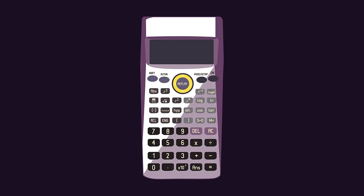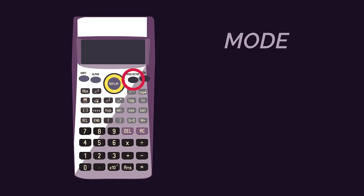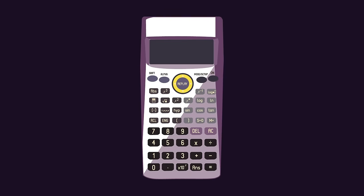When you're done with your table of values, to get your calculator back to normal, click mode and then 1comp. So that's how you use your calculator to find the table of values.